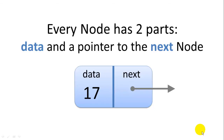Every node has two parts: data and a pointer to the next node. The data can be very complex, or in our case we're just going to use a simple integer for our data. A linked list is a whole collection of nodes, so the next pointer will always point to the next node in the list.